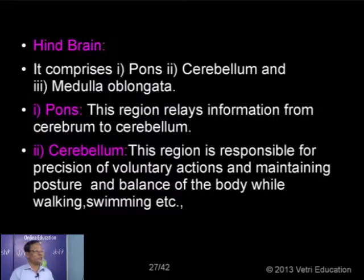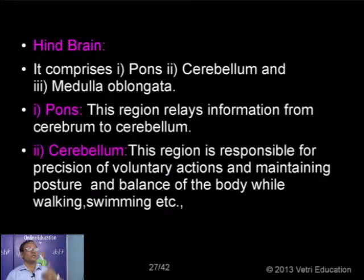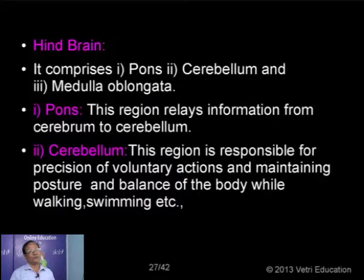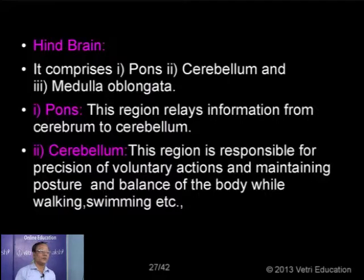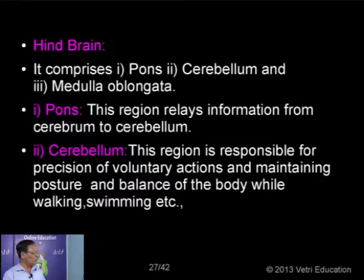The role of pons: it is a relay center, normally relaying information between the cerebrum and other parts of the body. It receives information from the cerebrum and conveys messages to other parts of the body, and also receives information from various parts of the body and conveys messages to the cerebrum. In addition, the pons also contains sleep centers and breathing centers. So along with medulla oblongata, it is a main center for breathing. The pons, in addition to acting as a relay center, is also responsible for coordinating the breathing movements along with medulla oblongata.